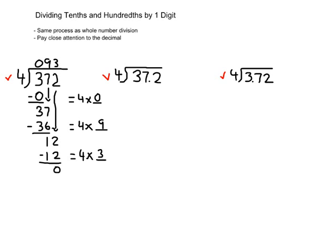So we get an answer of 93 as our quotient. Now let's do the decimal: 37.2 divided by 4. The process is exactly the same. We ask ourselves how many groups of 4 can go into 3 — that's not possible since 4 is greater than 3, so it is 0 times. The 0 goes over the 3.